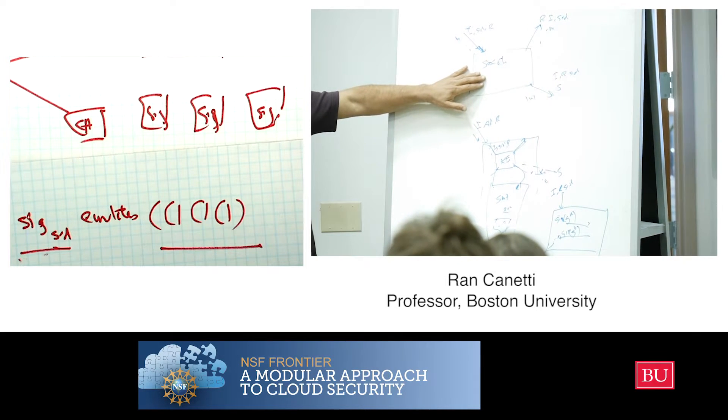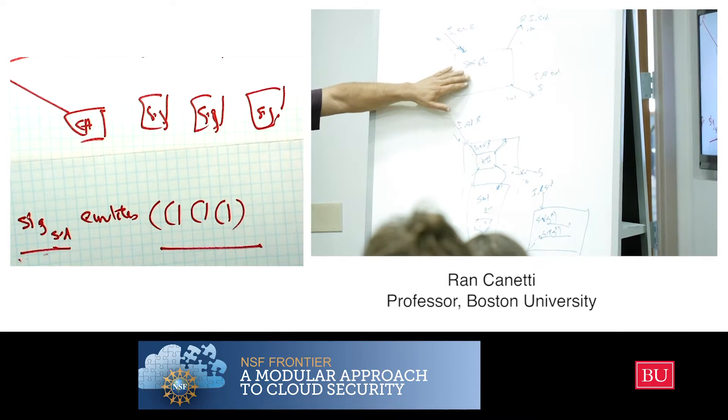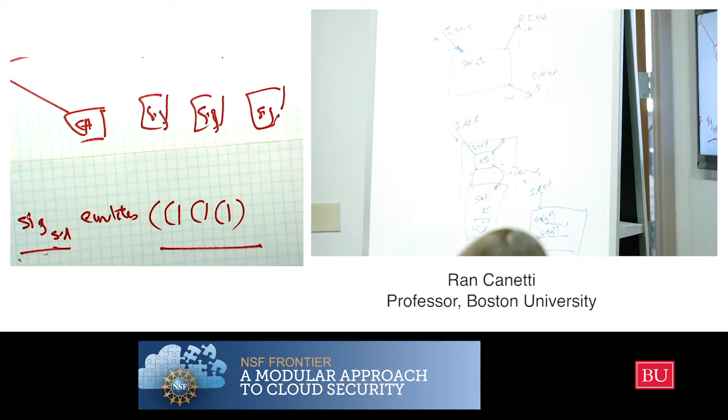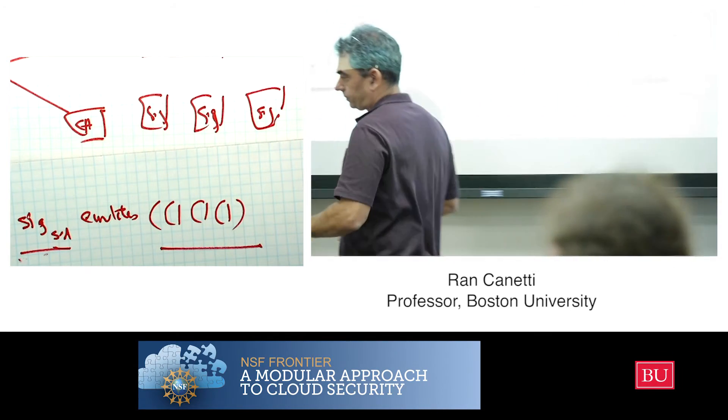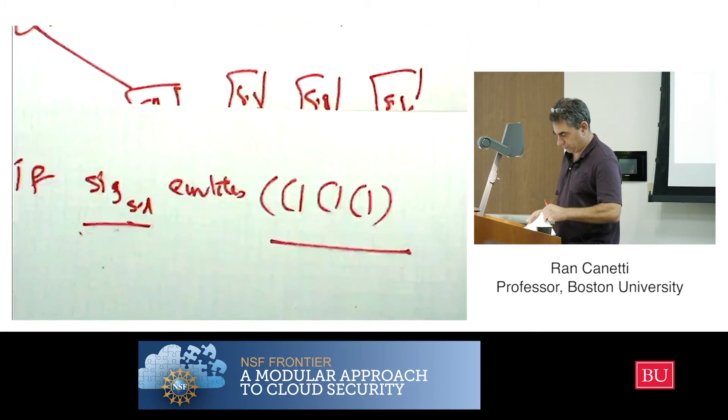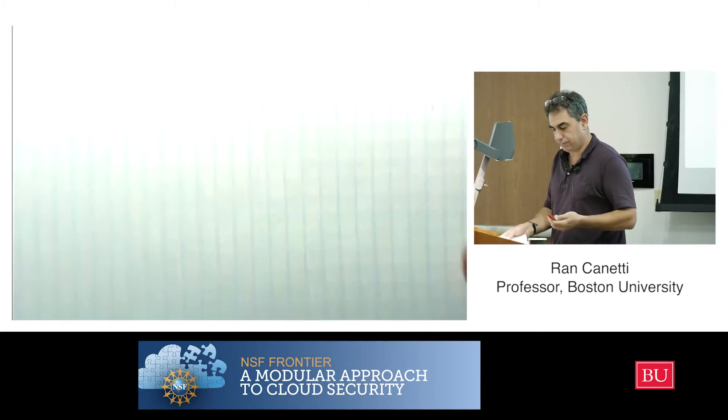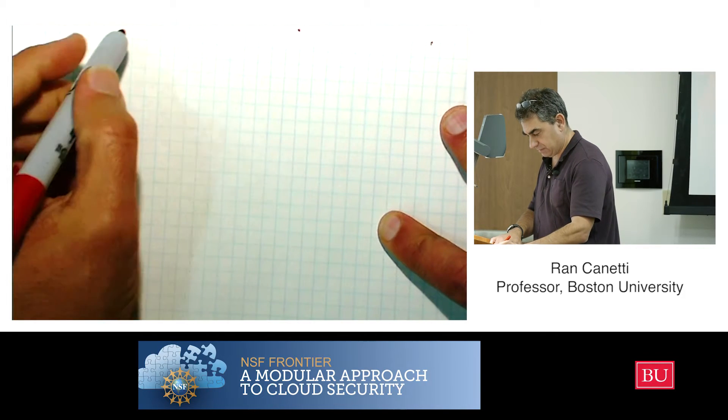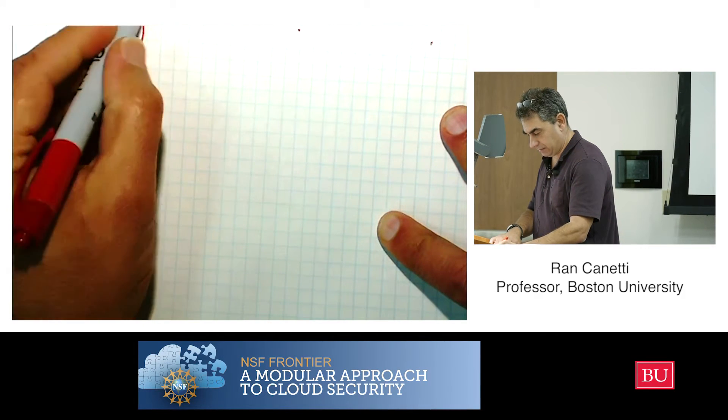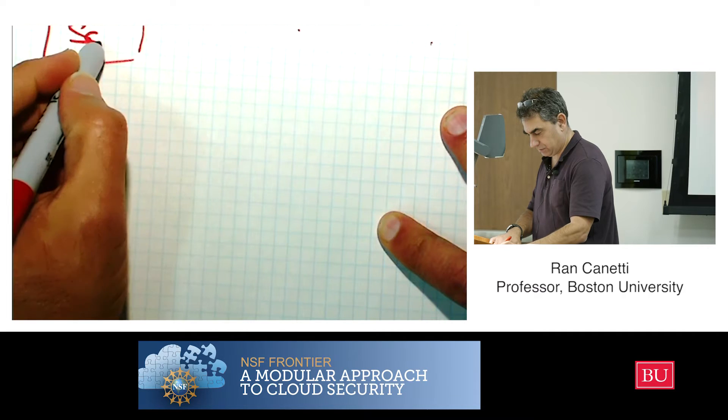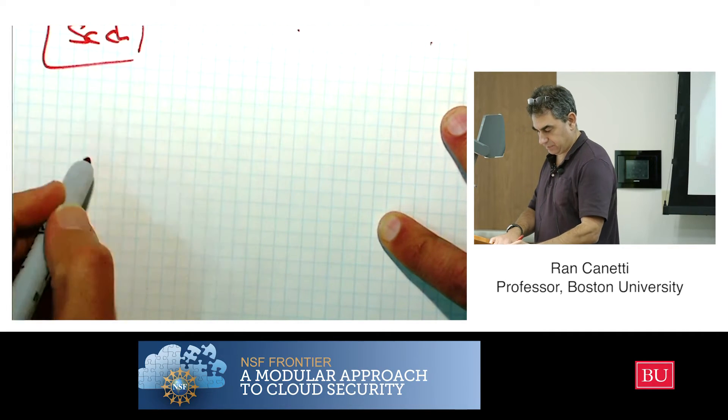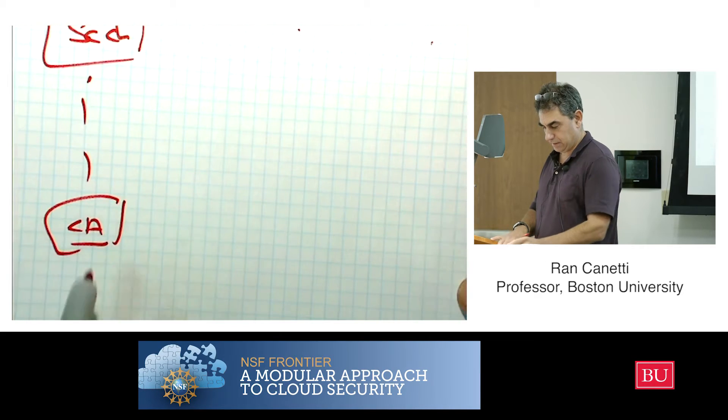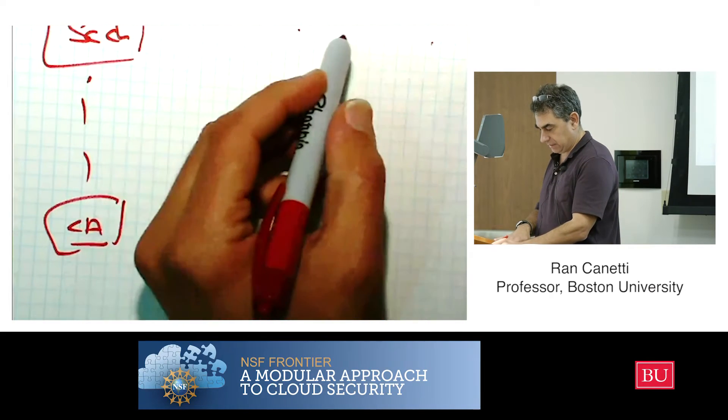So if before I was thinking of realizing - so here's my protocol with secure channel, that's the protocol, and here underneath there was this CA that was part of the implementation.